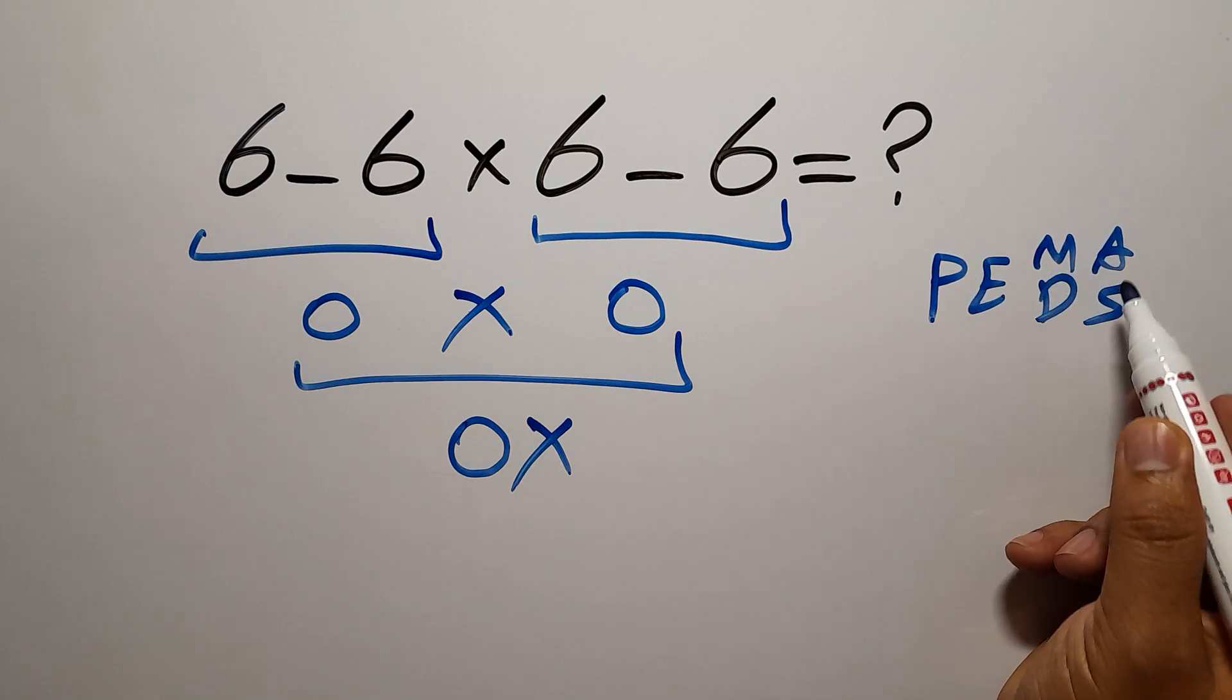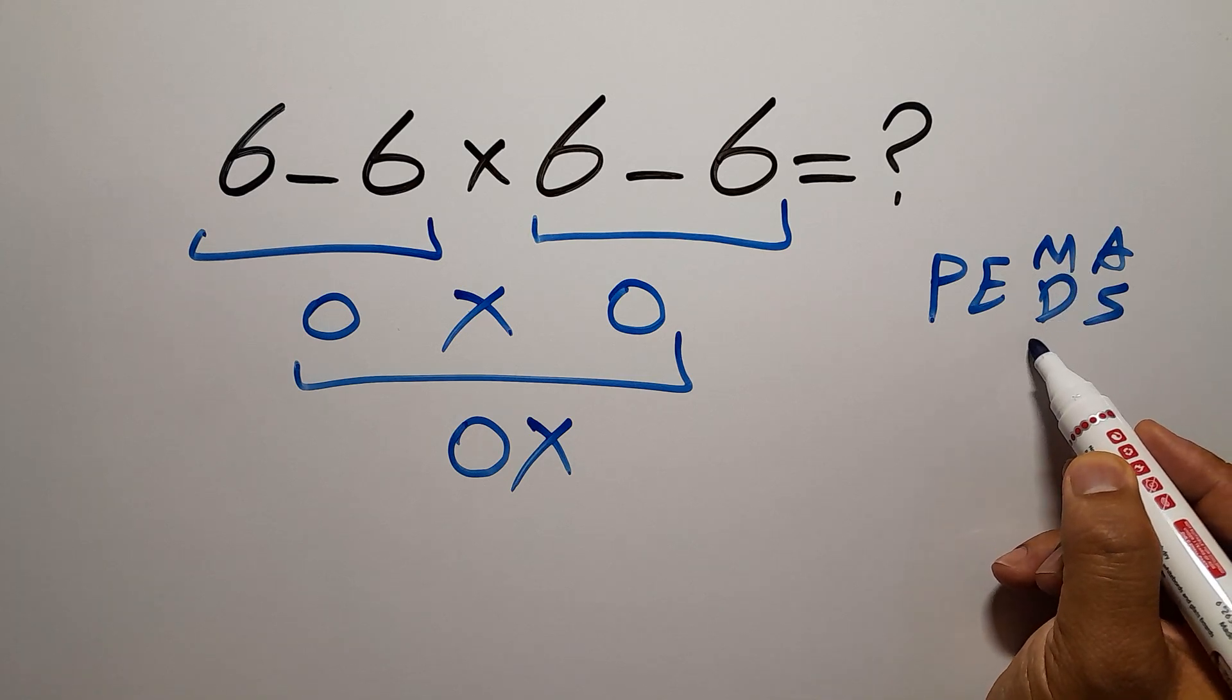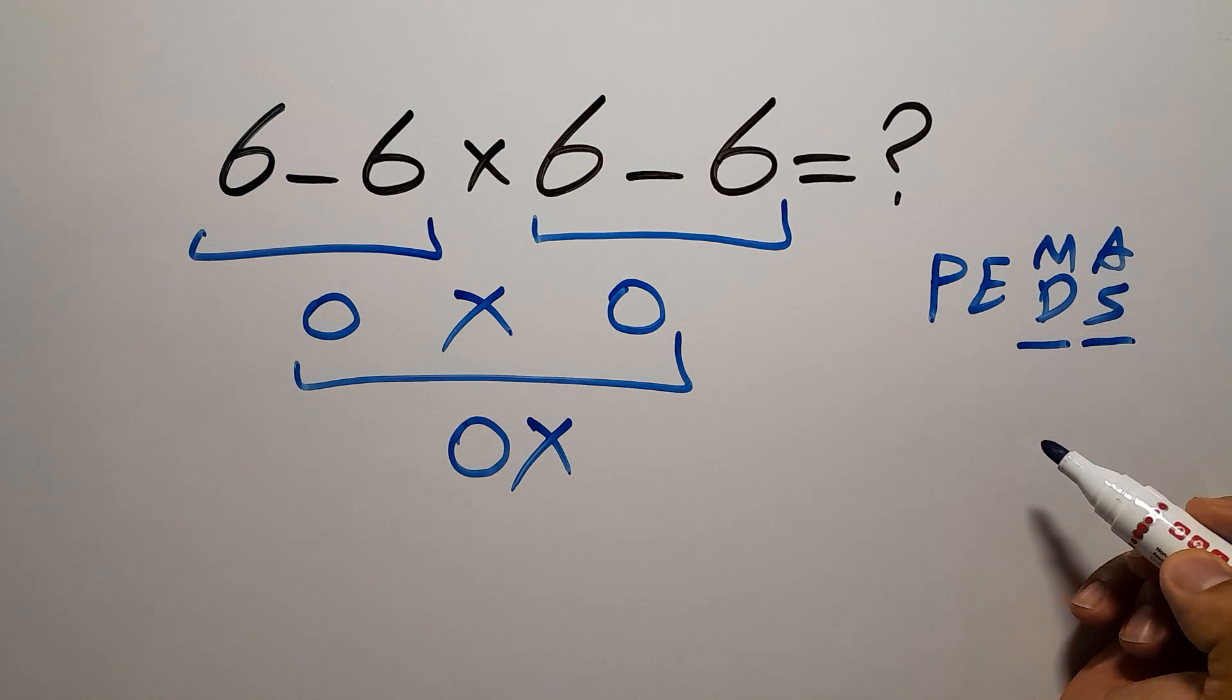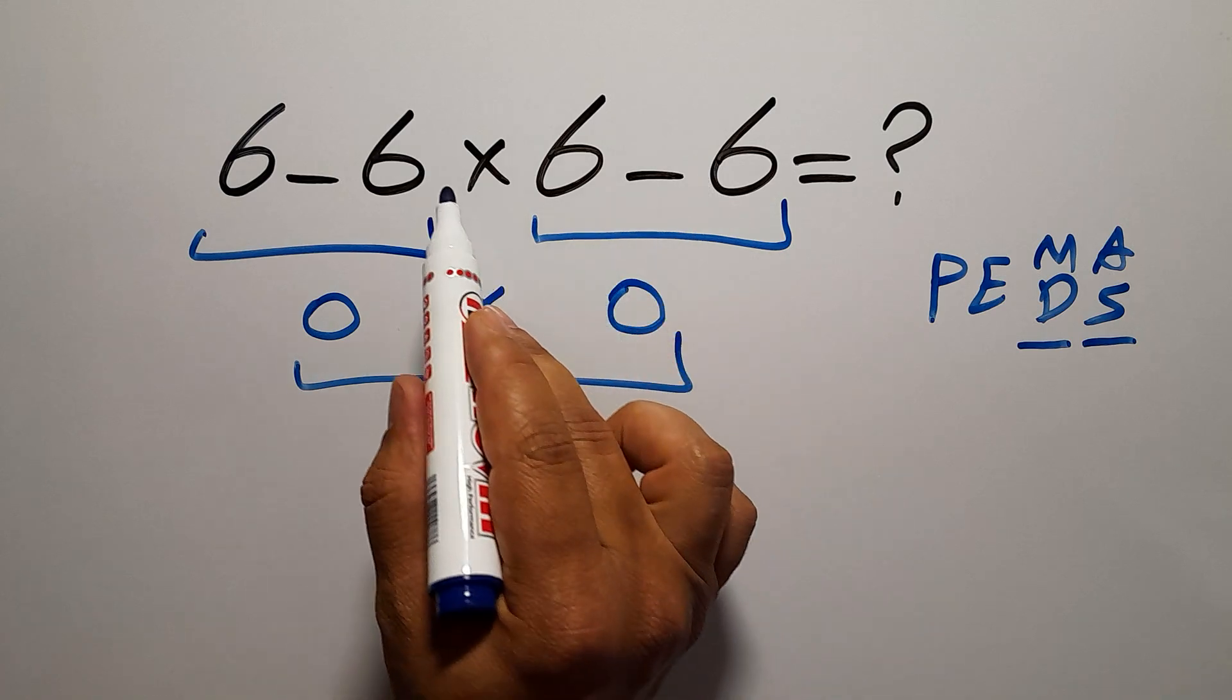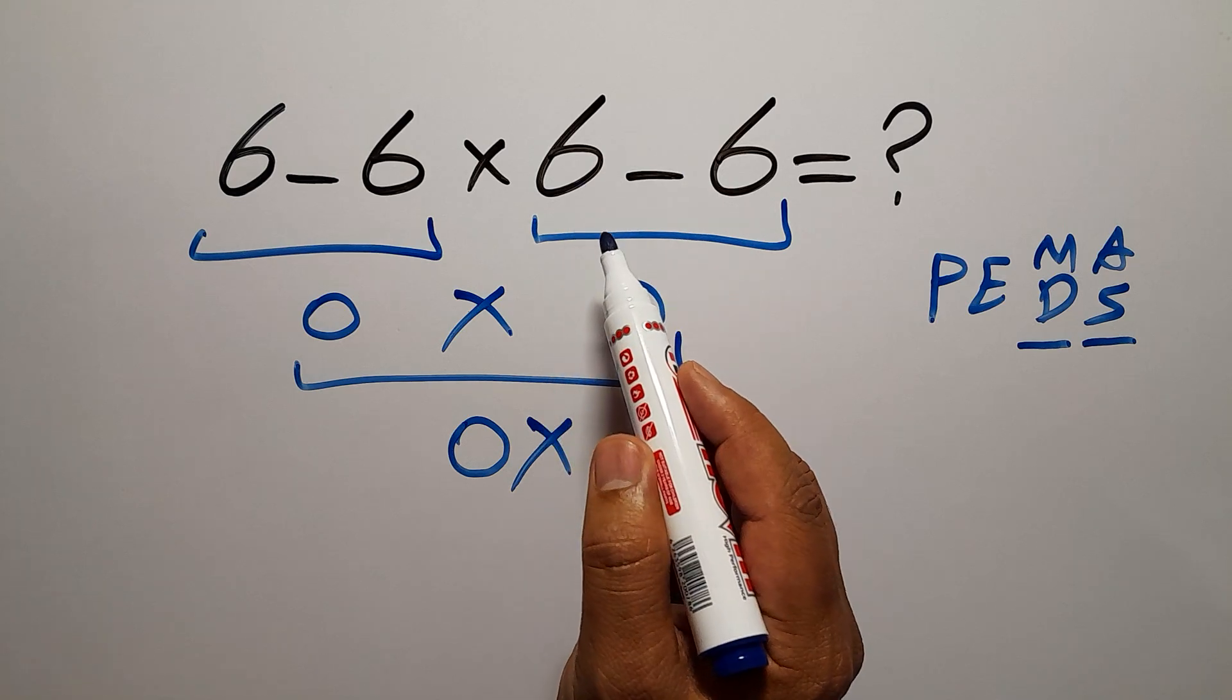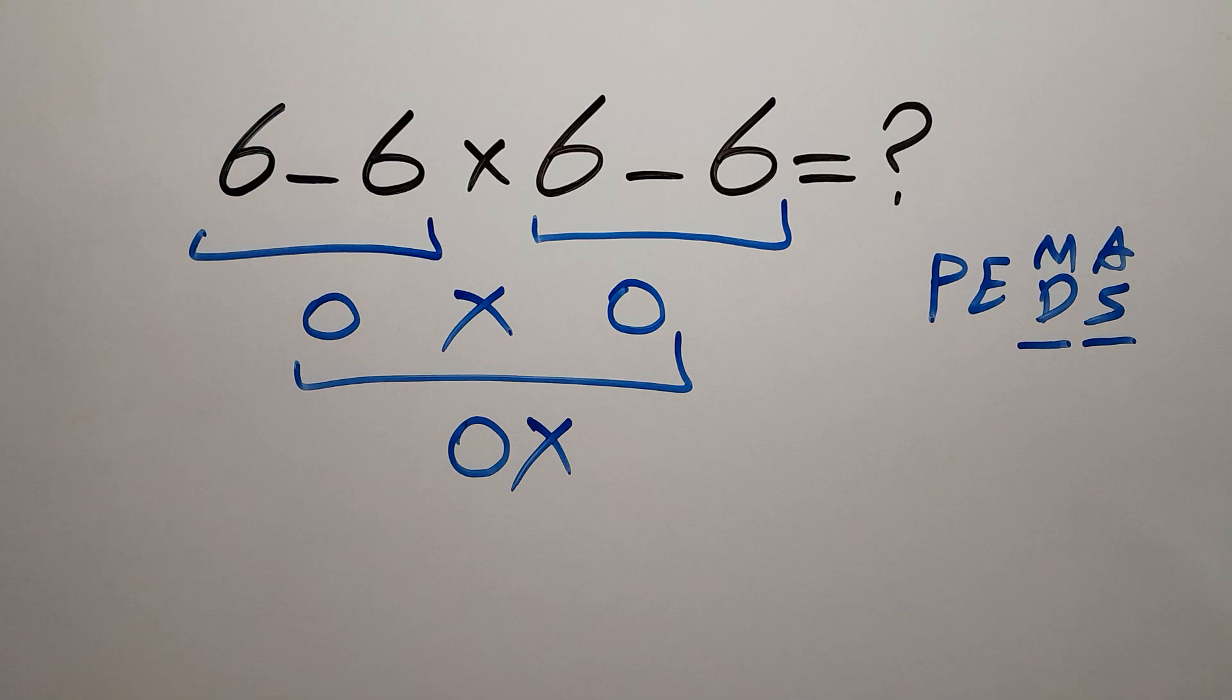Remember that multiplication and division have equal priority and we have to work from left to right, and the same applies to addition and subtraction. Here in this expression we have two subtractions and one multiplication. In PEMDAS, multiplication comes before subtraction, so first we have to do this multiplication.